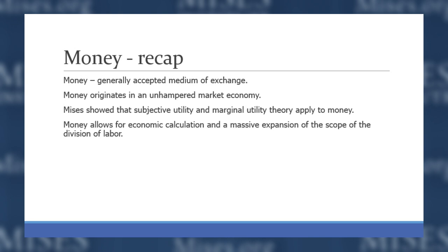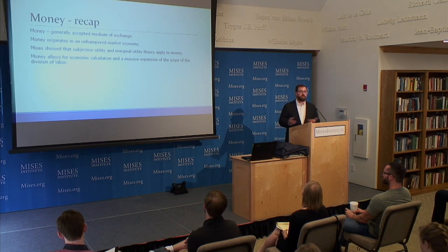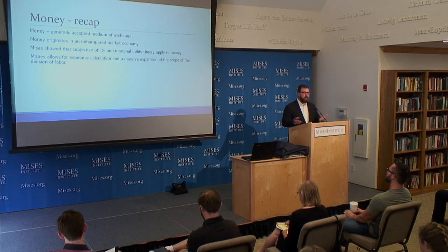Just a recap of what we learned from Professor Herbner: money is a generally accepted medium of exchange. It can arise on the market, and the fact that it comes on the market solves specific economic problems. We have the double coincidence of wants problem in barter, and money helps us solve that problem, making many more exchanges feasible where they weren't feasible before. It originates in an unhampered market economy.